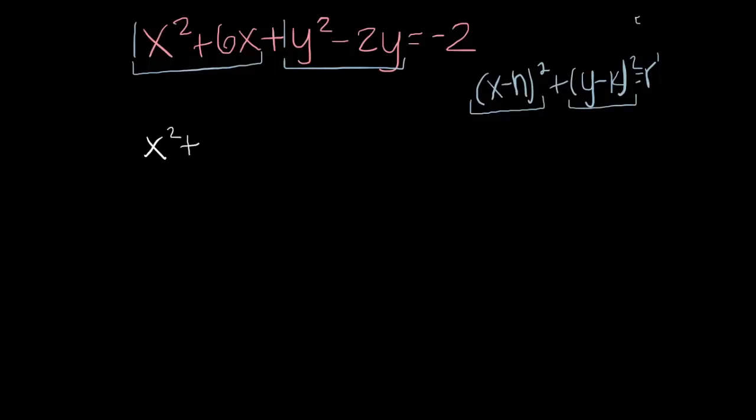x squared plus 6x. Now, I know that this is always going to be positive, right? So, if I want to complete the square, I'm going to take half of the 6 and I'm going to square it. So that gives me 9. Because when I then factor this, I get x plus 3 quantity squared.